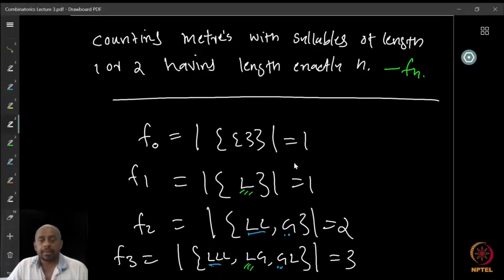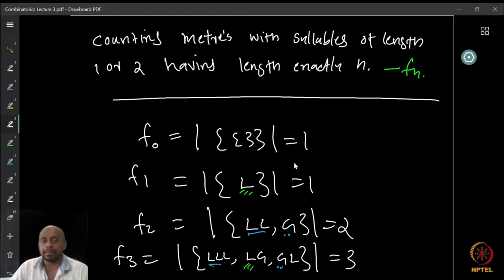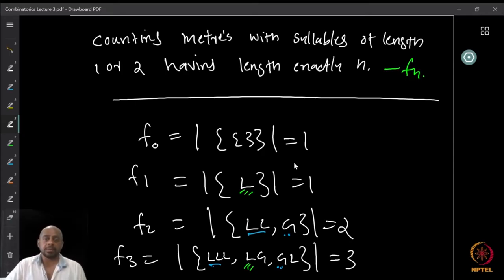Now, I also gave you another former question: count the Sanskrit meters where the syllables have length exactly one or two, and we wanted to count those meters which have length exactly n syllables, where the length of each syllable can be either one or two. So how many such meters are possible? How many distinct meters are possible with this property?